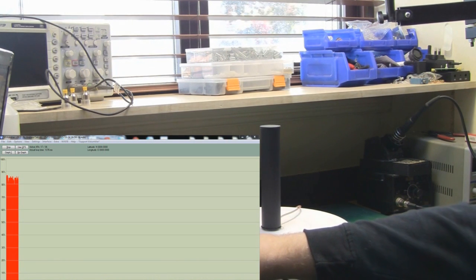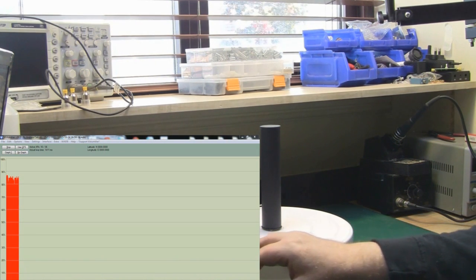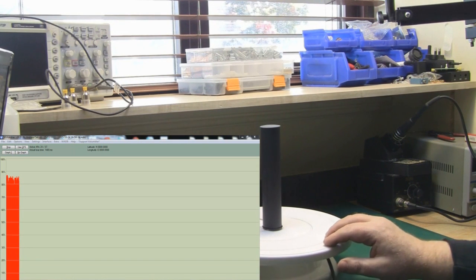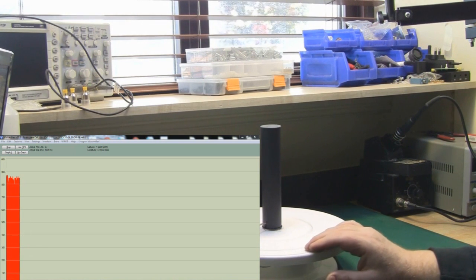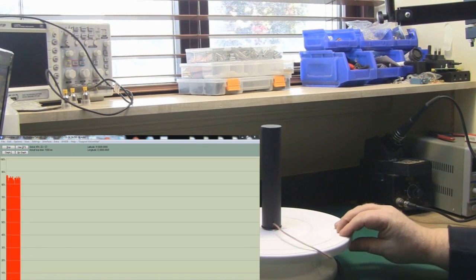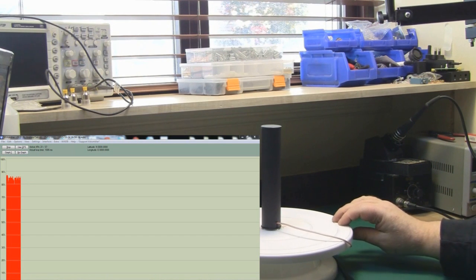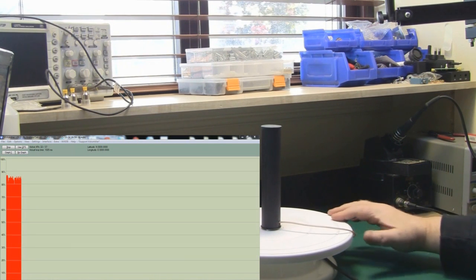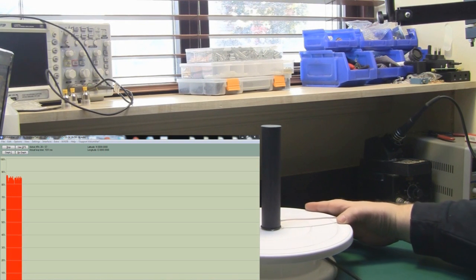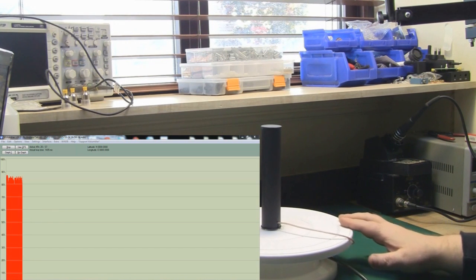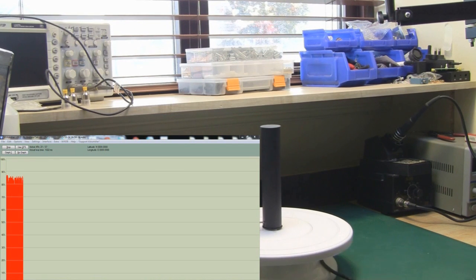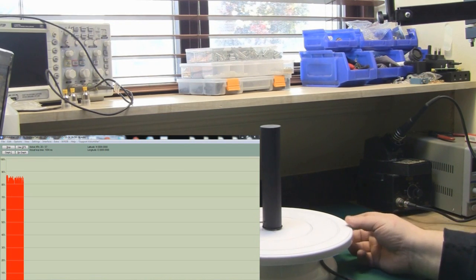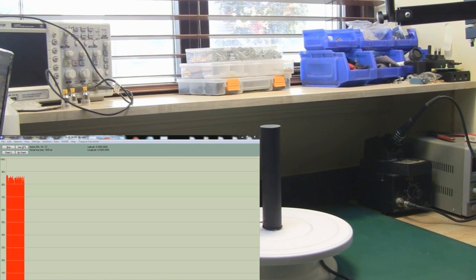So I'm moving it nice and slowly just like before, and that signal is staying pretty steady around 85%, so I've got a nice big block of red there now. So it looks like that modification has made this antenna perform even better than before, so I'm pretty pleased with that.